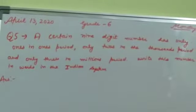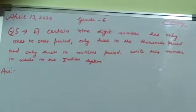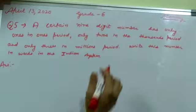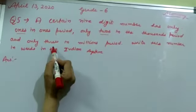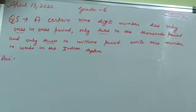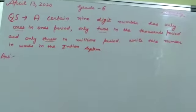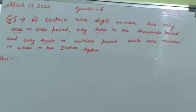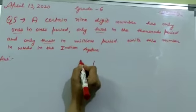Come to question number 5. A certain 9-digit number has only ones in the ones period, only twos in the thousands period, and only threes in the millions period. Write this number in the Indian system. According to the international system, the ones period has 1s. Write 1, write 2, and write 3.